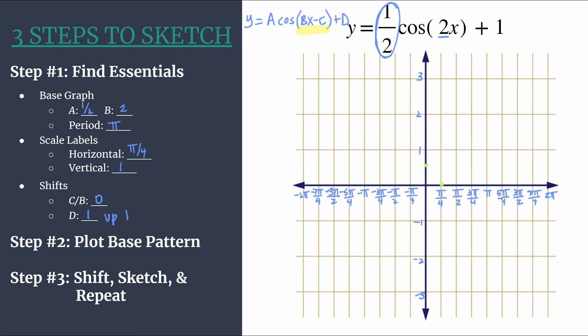Then our next base pattern point will be a minimum. It's going to happen at π/2 and it's just the opposite value of a for its y coordinate. So it's negative 1/2. We're rounding out our pattern at the third horizontal tick mark to the right of the origin and it's another x-intercept. Let's go ahead and put the first point, our next maximum, so that starts the next cycle. This is our base pattern and that's all we really need to do in step two.